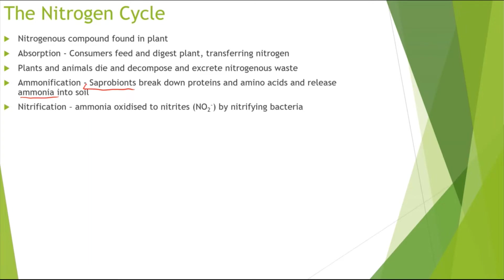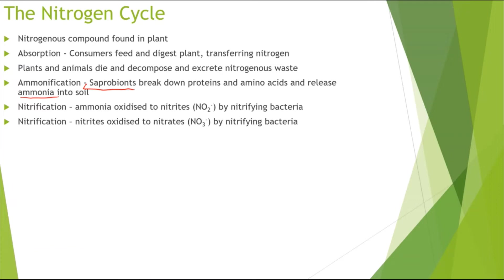You can also refer to ammonia as ammonium compounds. Then nitrification occurs: the ammonia is oxidized to nitrites — we end up gaining oxygen, that's why it's oxidation — and this is done by nitrifying bacteria. Then nitrification occurs again: the nitrites formed are oxidized further to nitrates, also done by nitrifying bacteria. Absorption could then occur: the nitrates could be absorbed by the plant root hair cells via active transport, so the nitrates present in the soil would be absorbed into the plant.